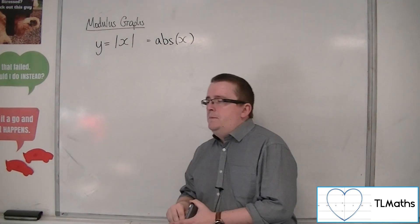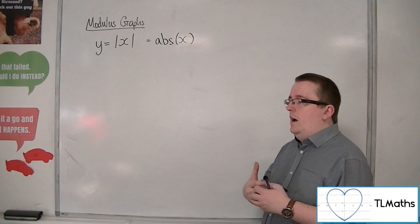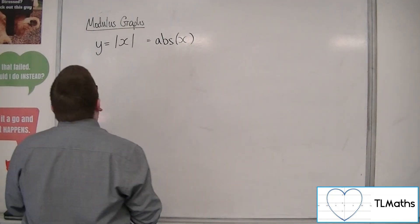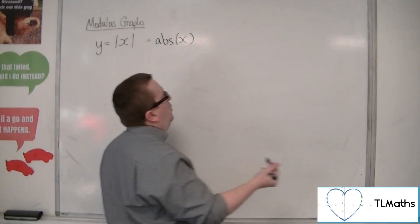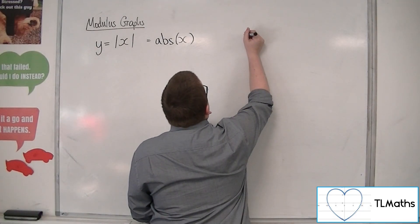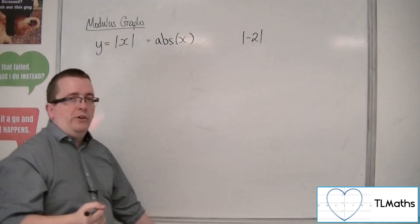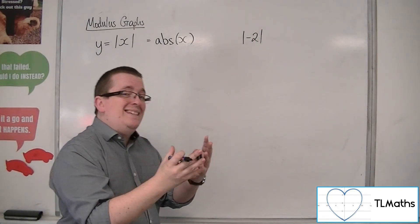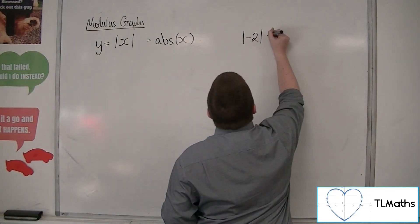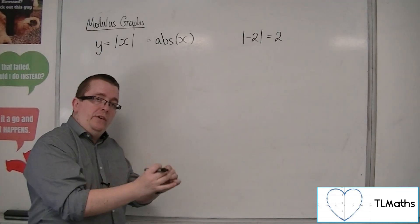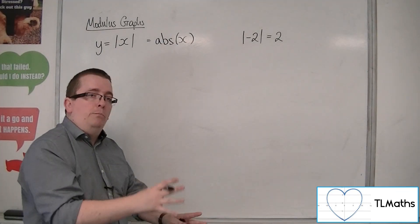And what it means is it's kind of telling you the length of x, the magnitude of x. So if I put in a negative number, for example, like minus 2, between the modulus signs, what it does is it makes the number positive. So all values that go into the modulus sign will come out as positive.